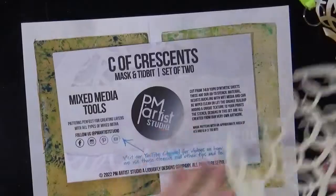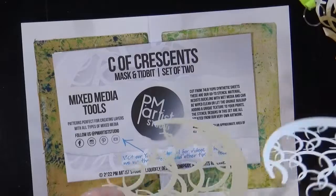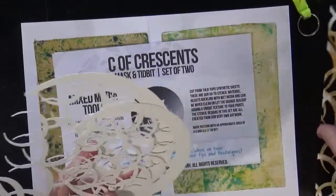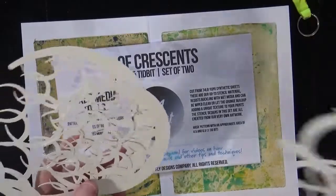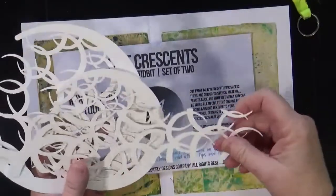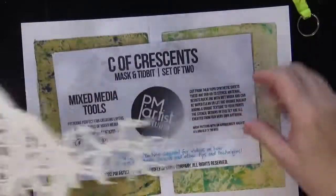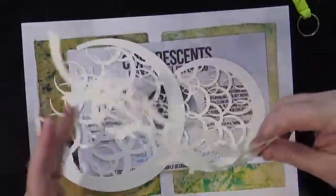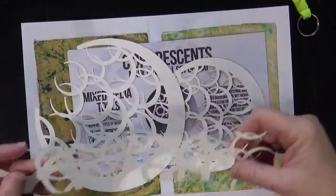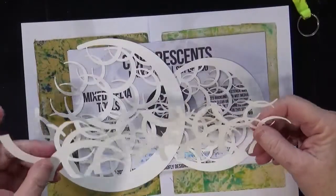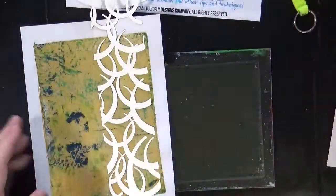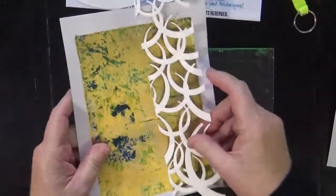This is another PM Artist Studio set of stencils. And I've used these before in another video. But I used them as stencils before and I want to use them. Actually, I want to gel print with them. And this is called the Sea of Crescents. And you get two stencils or two masks, whatever you want to call them. And then this is called a Tidbit. But I think this, especially on this one, I think this could be super cool.